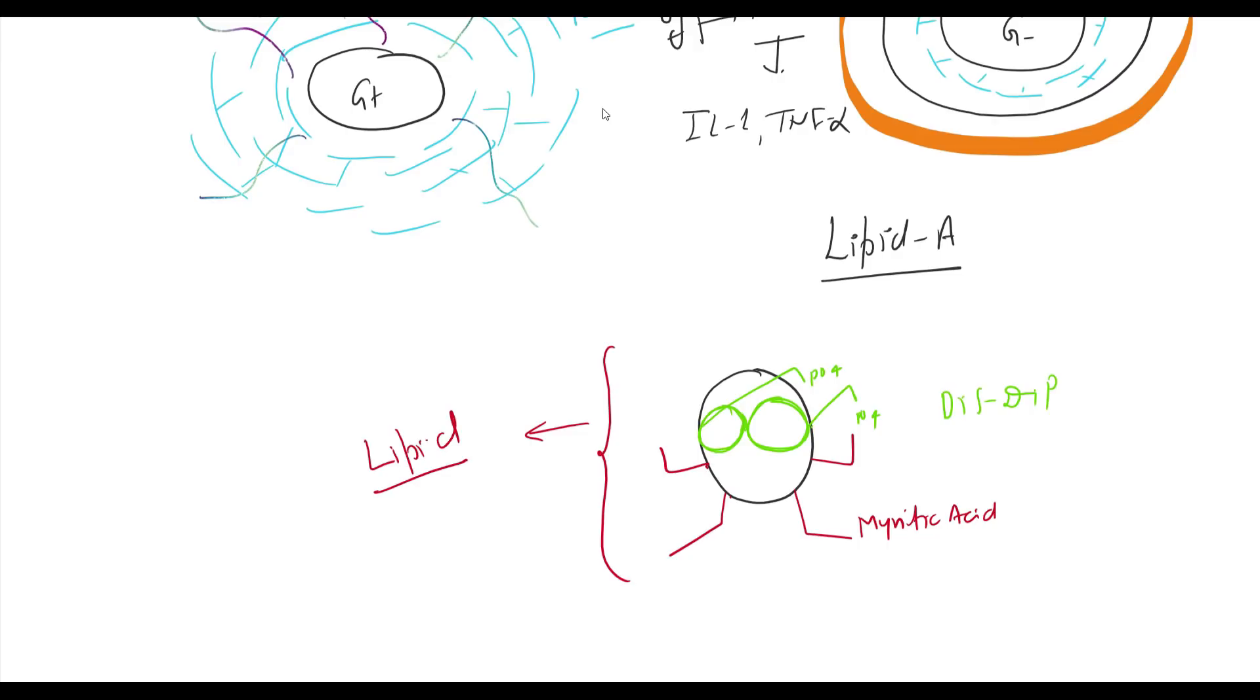Lipid A is universal in all gram negative bacteria. It is not present in gram positive bacteria. In all gram negative bacteria, lipid A is identical. So whether it is E. coli, Pseudomonas, Neisseria, Acinetobacter, lipid A of all these bacteria will be identical. This lipid A is not immunogenic. So no antibody is formed against this lipid A but it is very pathogenic, which produce severe disease and endotoxic shock.